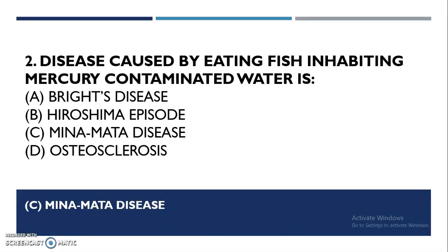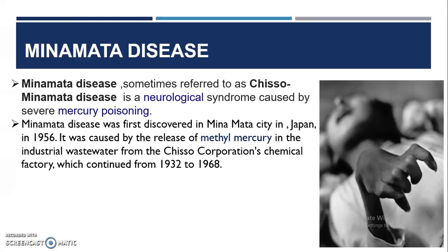Second question: the disease caused by eating fish inhabiting mercury-contaminated water is Minamata disease. It is a neurological syndrome caused by severe mercury poisoning, also called Chisso Minamata disease. It was first discovered in Minamata city in Japan in 1956, caused by the release of methyl mercury in industrial wastewater from Chisso Corporation's chemical factory, which continued from 1932 to 1968.